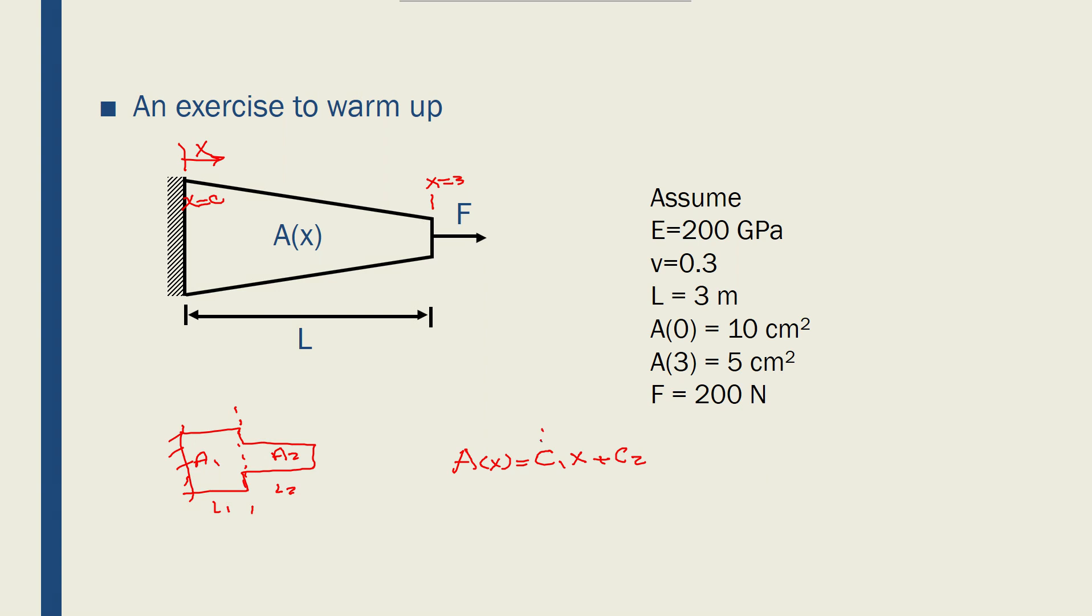And in order to find the C1 and C2 I have to look at the boundary conditions A0 and A3. So at x equals 0, A is equal to 10 cm squared, which should give me C2. And at x equals 3, A is equal to 5 cm squared which would give me C1.